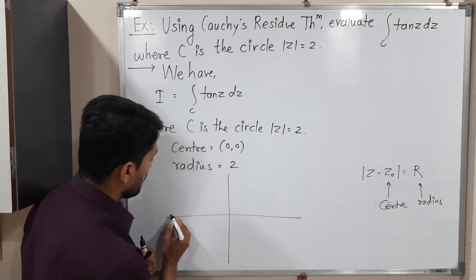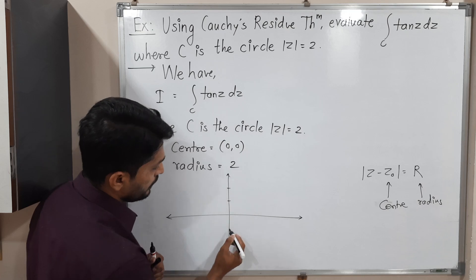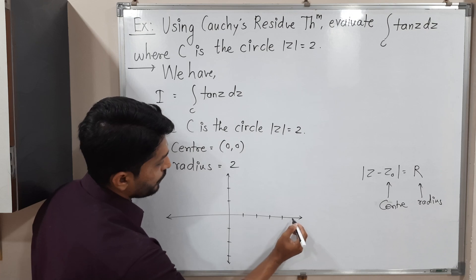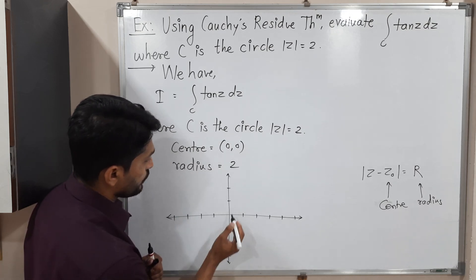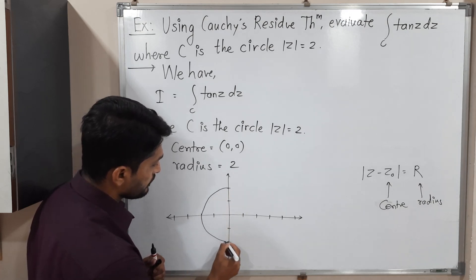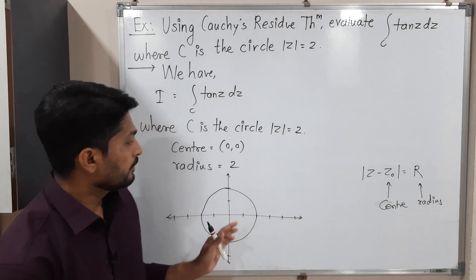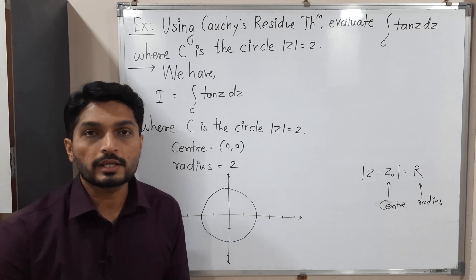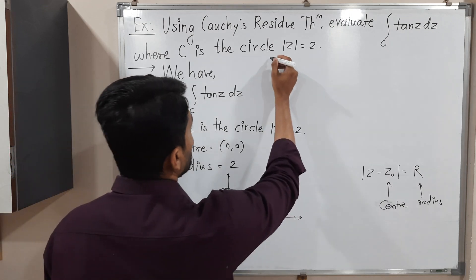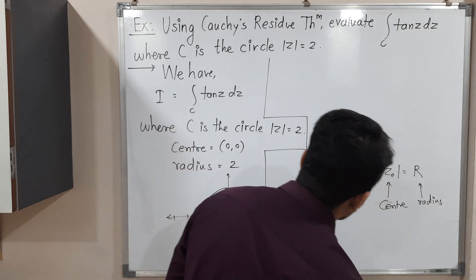Let us draw the circle: imaginary axis, real axis, marking 1, 2, −1, −2. Our center is (0, 0) and radius is 2, so we have a circle like this. Now we also have to consider the function — the function is tan(z), so f(z) = tan(z).